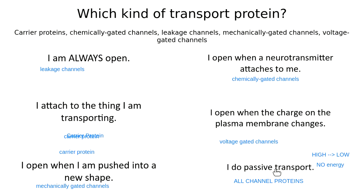Carrier proteins can do both. They can do passive transport if they're moving stuff from where there's a lot of it to the other side where there's not as much. But carrier proteins also do all of the kinds of active transport.